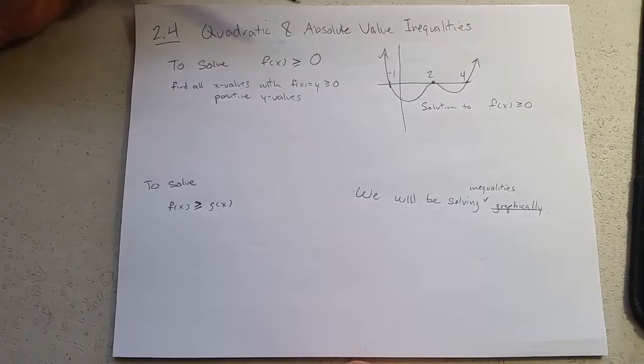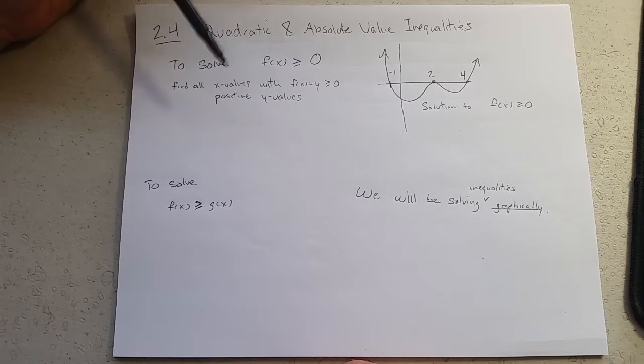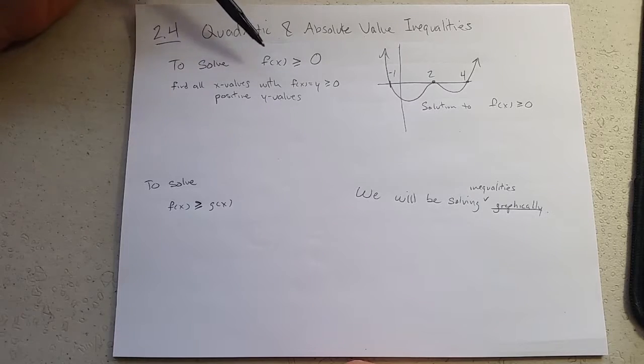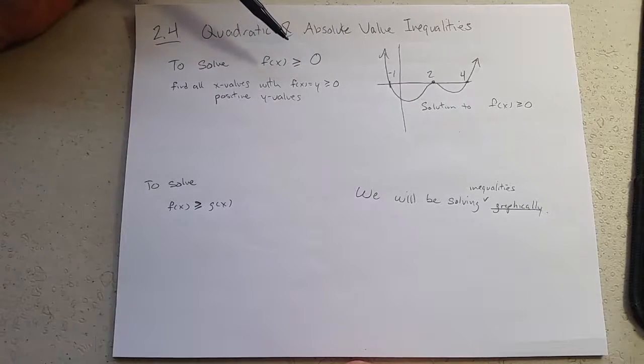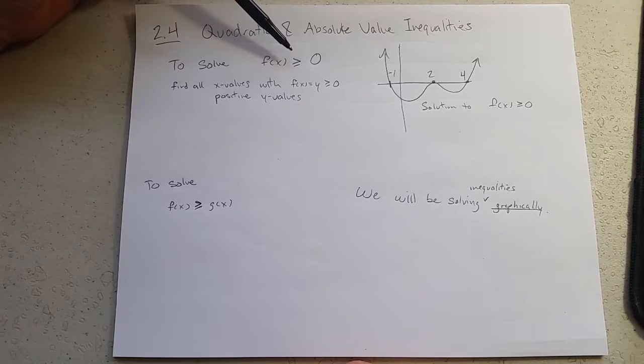2.4 is quadratic and absolute value inequalities. We're going to be solving inequalities which have a greater than, greater than or equal to, less than, less than or equal to sign in them instead of a regular equal sign.